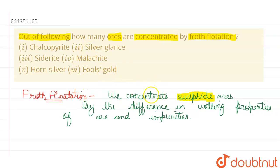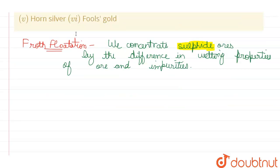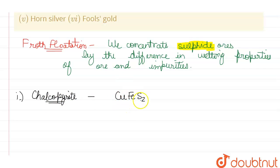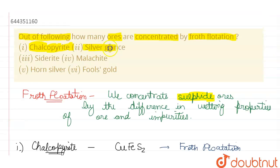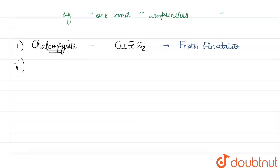All sulfide ores will be eligible to undergo froth flotation. Our first compound is chalcopyrite. Chalcopyrite has a chemical formula CuFeS₂ — it contains sulfide, so it is a sulfide ore and therefore it can undergo froth flotation.